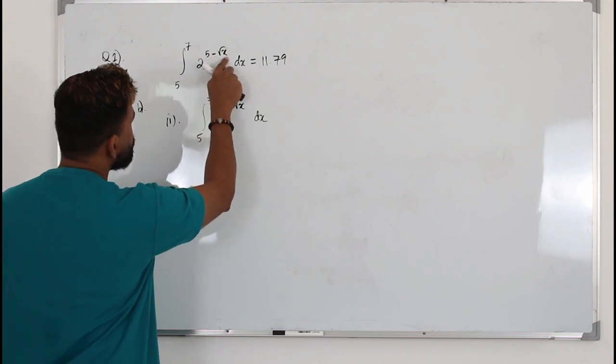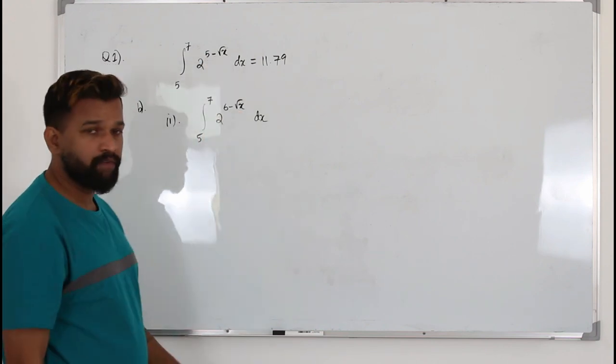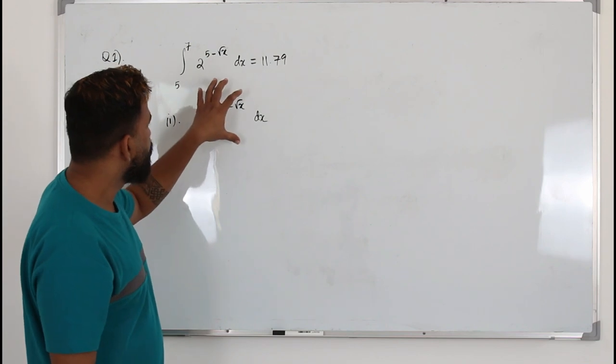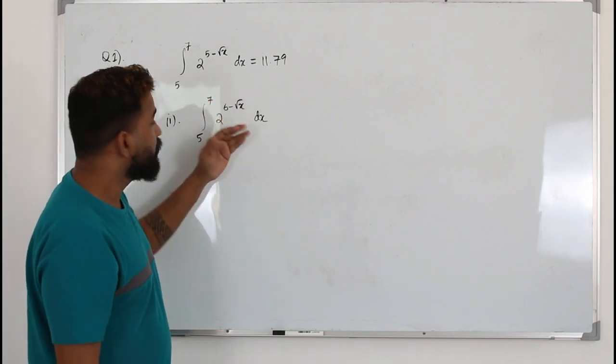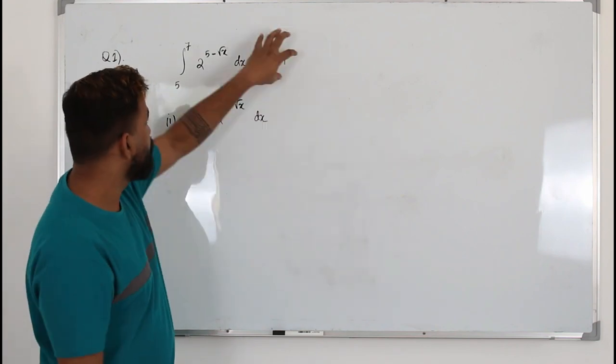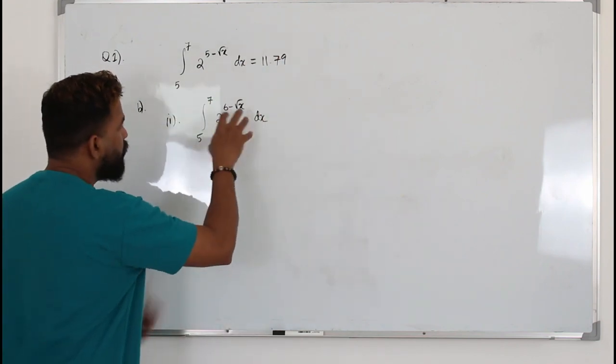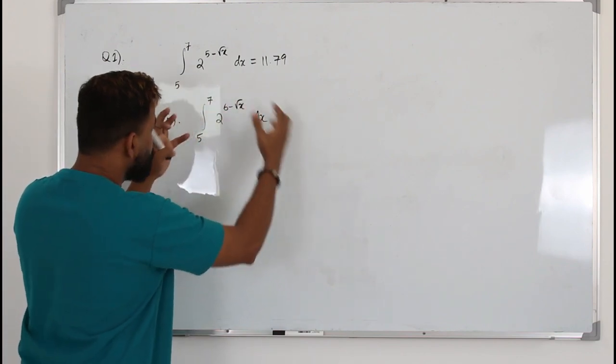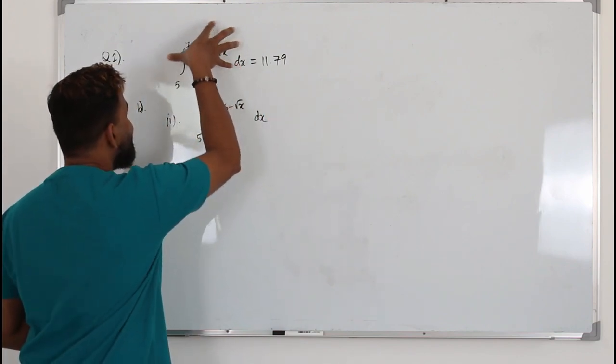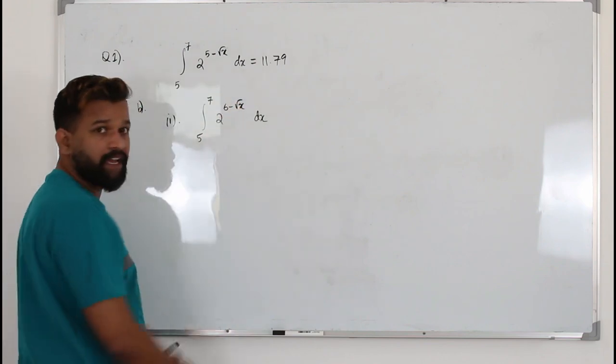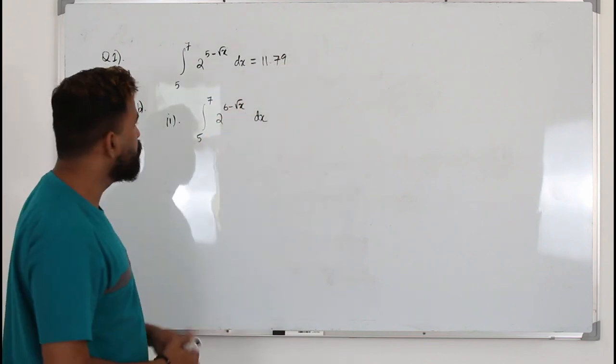Instead of 5 minus square root of x, you have 6 minus square root of x. You need to find the value of this integration. We are not going to integrate this function. We are going to apply this value here. So you have to find a way to split this function or do something so that you can sneak in this function in here, so you can replace it with this value. How do we do that?